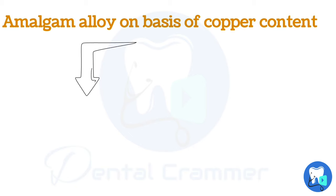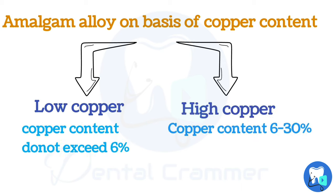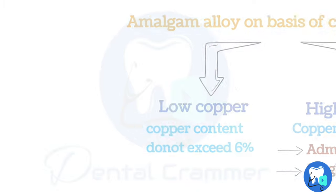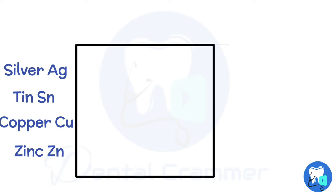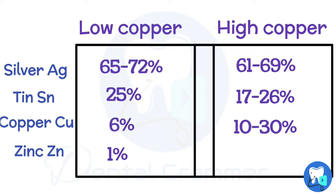On the basis of copper content, there can be low copper alloys or high copper alloys. Low copper or conventional alloys have a copper content that does not exceed 6%. High copper alloys contain copper from 6% up to 30%, and are generally admix or single composition alloys. Both low copper and high copper alloys contain silver and tin as the basic ingredients, with the difference lying in the copper content. Zinc is added, which acts as a deoxidizer.